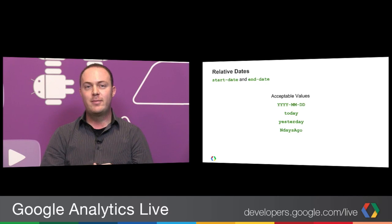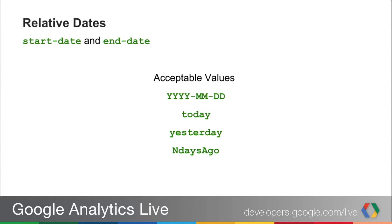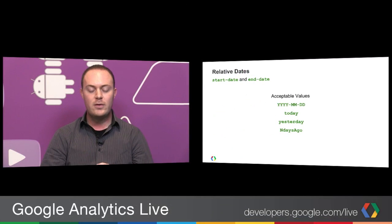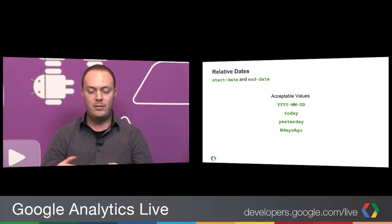Another thing released this past month was relative dates in the Core Reporting API. This is a powerful feature, especially if you're building ongoing reports relative to a specific date. Whenever you make a request, you always need to provide start date and end date. Previously the only acceptable value was the year-month-day format. We've now added three new values you can use in place of that standard format: 'today', 'yesterday', and 'NdaysAgo'. With these three values you can create any query you'd like with relative dates for any period of time.